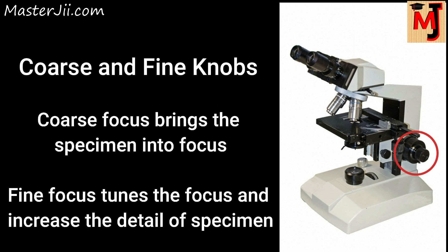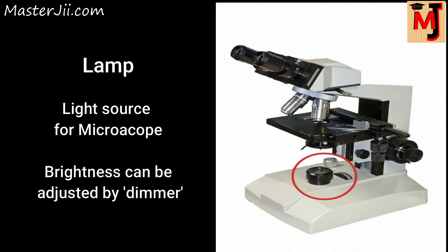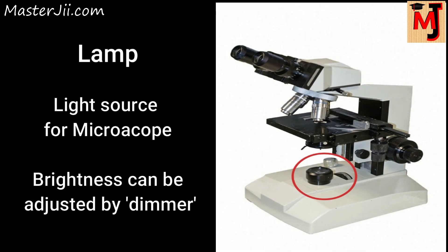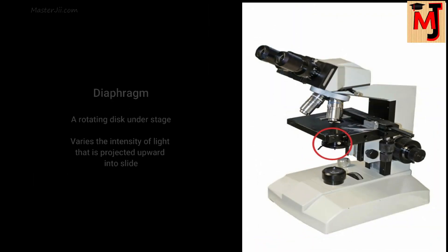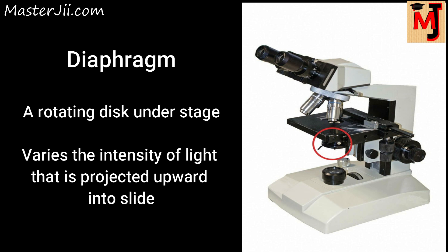The lamp is the light source of a compound microscope. The lamp brightness can be adjusted using the dimmer. The diaphragm is the rotating disc under the stage; it varies the light intensity that is projected upwards into the slide.